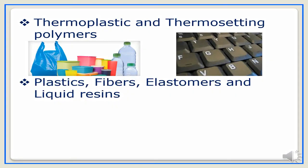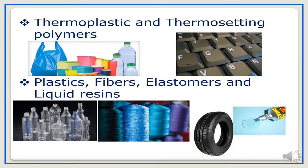The fourth way of classification is plastics, fibers, elastomers, and liquid resins, based on how the polymers are converted into a finished product. Plastics are polymeric materials that become hard and tough when molded. Polymeric materials converted into fiber are called fibers. Those converted into an elastomer having elastic characteristics are called elastomers. Polymeric materials available in liquid form as adhesives are called liquid resins.